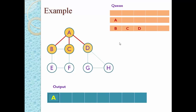Perform dequeue again — B is deleted from the queue because of FIFO and printed as output. Explore B: its neighbors are E and C. But C is already visited, so we only store E in the queue. The queue now contains C, D, and E.